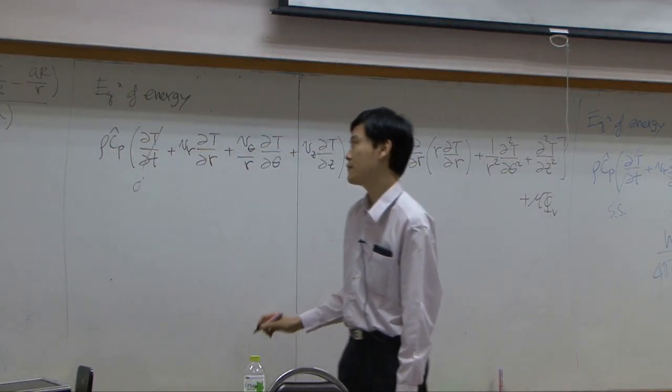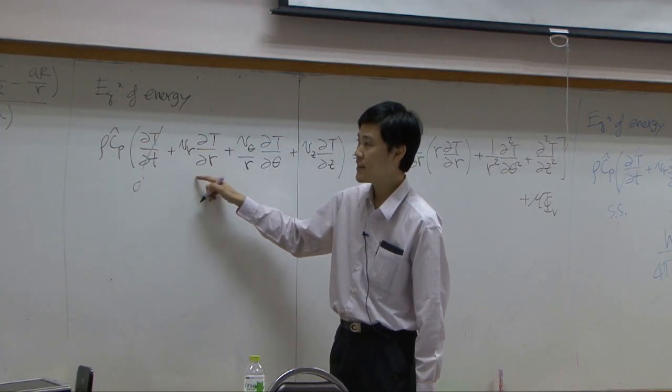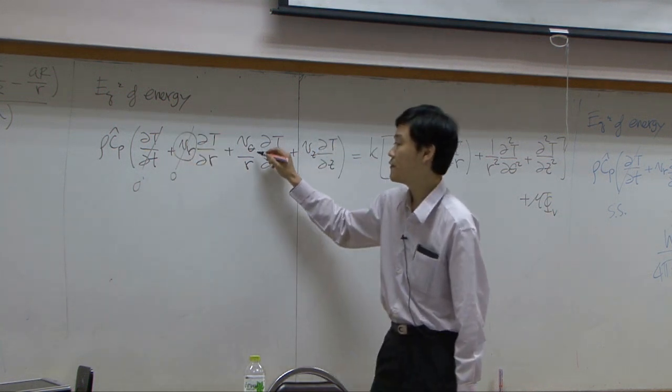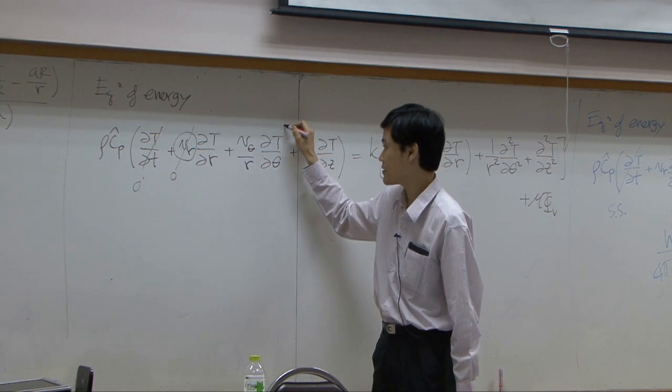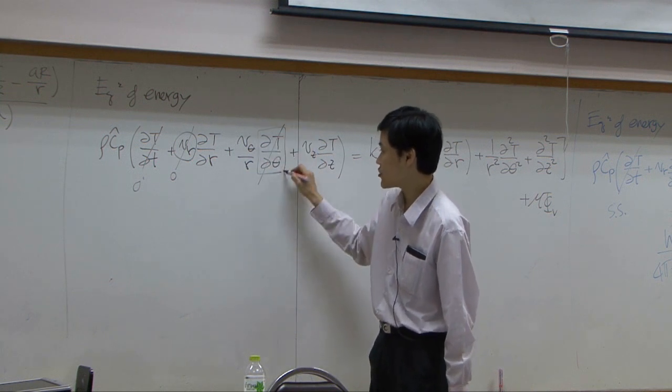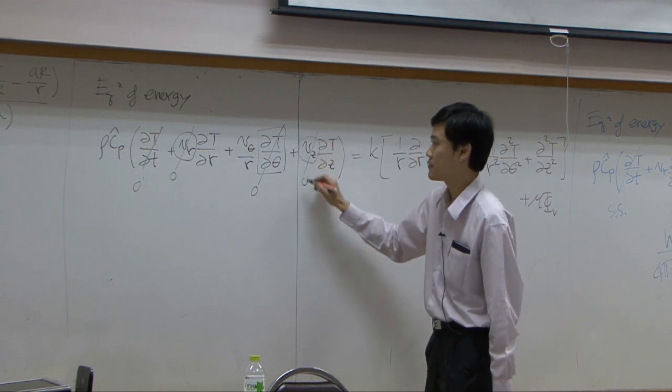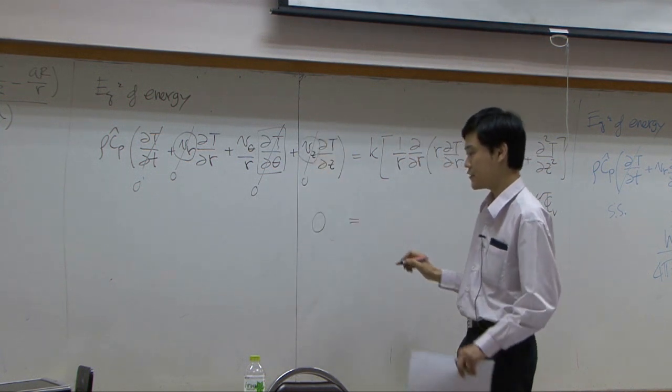Then you can drop this term for the steady state. This term can be dropped, right, because vr itself is zero. vz is not zero, but t does not change with respect to zeta. vc is zero. So left-hand side, you have zero.